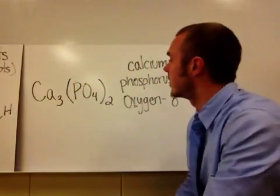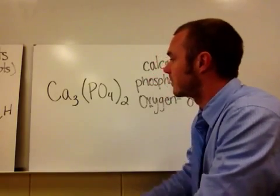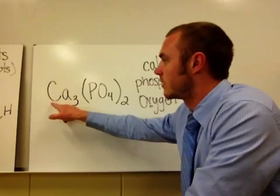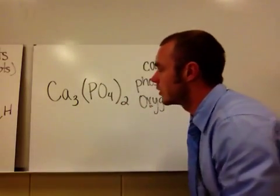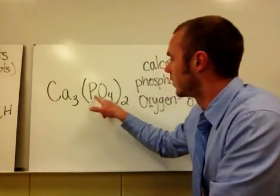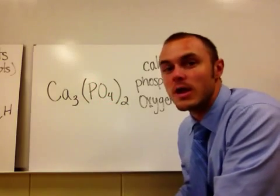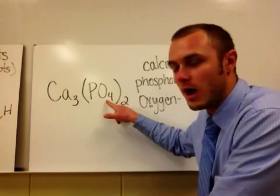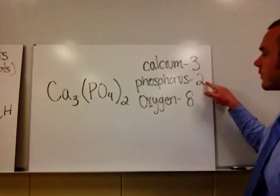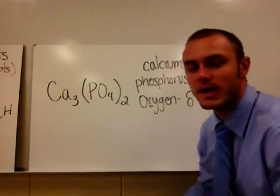This last example is the most complicated one, and requires all three rules. First, name the elements: Ca is calcium, P is phosphorus, and O is oxygen. Then apply the subscripts: the three goes with calcium, there's an understood one for phosphorus, and the four goes with oxygen. However, there's also a subscript outside the parentheses — that two gets distributed inside. So two times one gives two phosphoruses, and two times four gives eight oxygens. Plus three calciums from the beginning. That is how you count atoms.